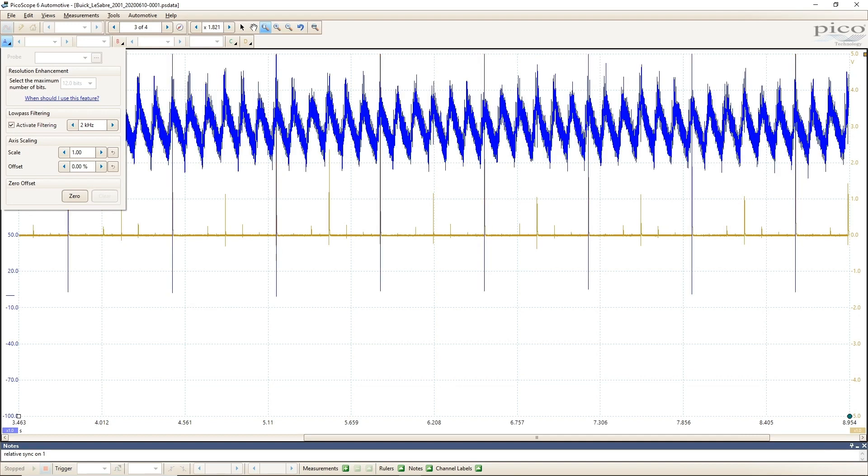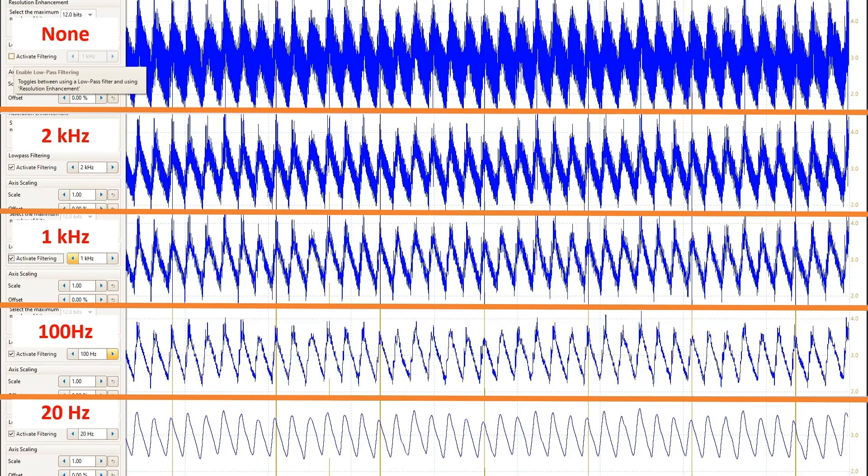You can also go the other way from the default of 1 kHz and raise it to 2 kHz. This still retains most of the waveform integrity, but it still filters out enough to make it a little easier to see the trends. And here are all of them on one screen. You can see as I lower the value on the low-pass filter, it filters out more and more.